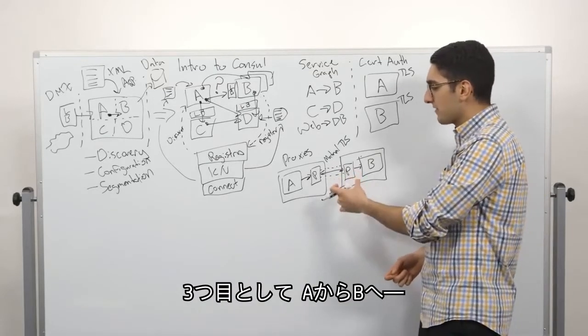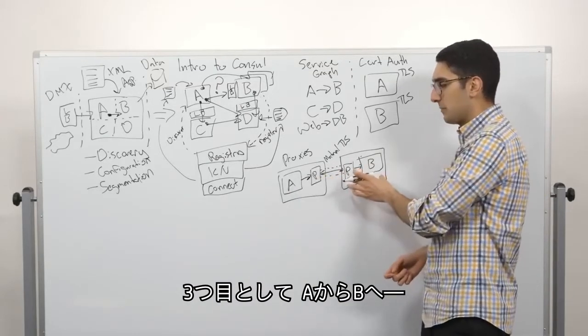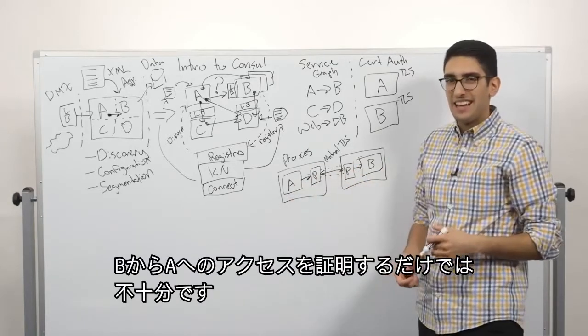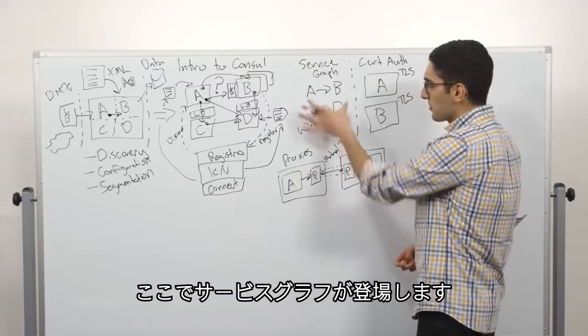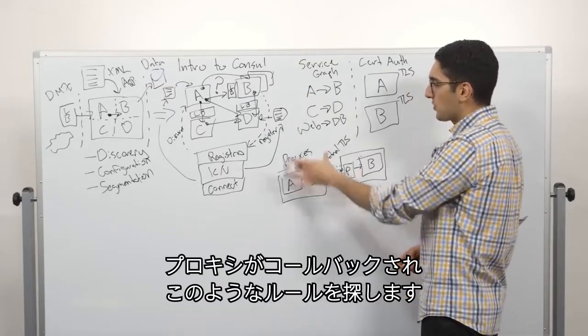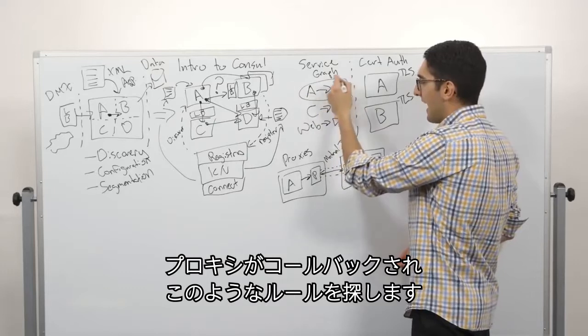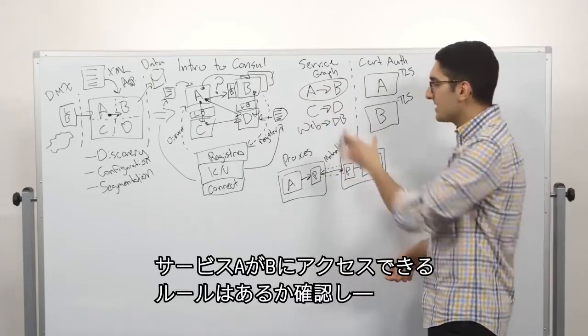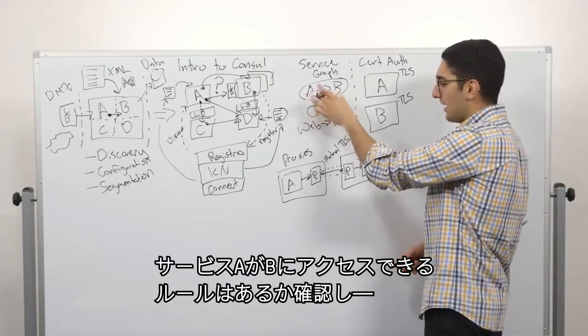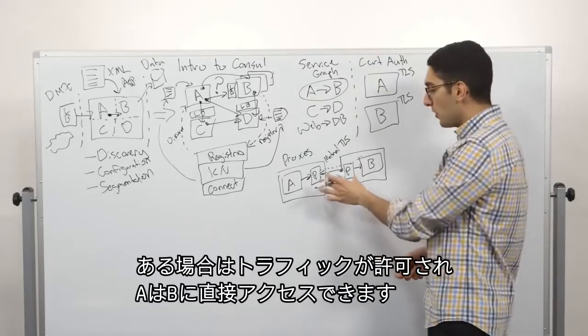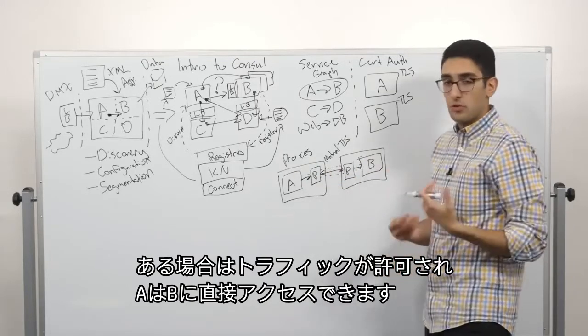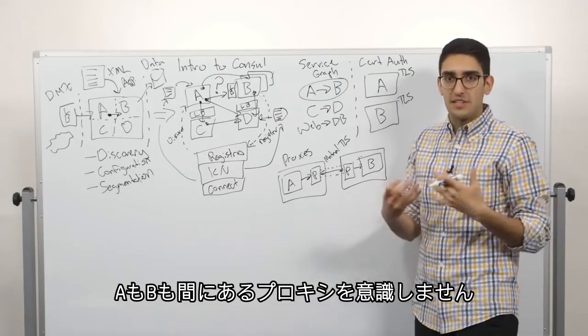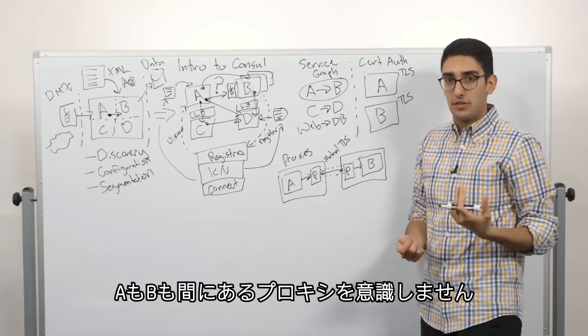Now, the third piece of this is just because A can prove it's talking to B and B can prove it's talking to A, that's not enough. Because it's not clear that should A even be allowed to talk to B. And this is where the service graph comes in. So then the proxies call back into the service graph and look for an arc like this. Is there a rule that allows service A to talk to service B? If so, then the proxies allow that traffic to take place and A is allowed to talk directly to B. And they're none the wiser that this intermediate proxying is taking place.